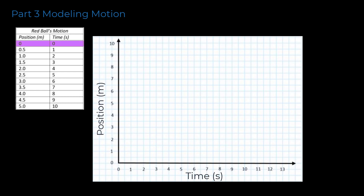The first dot is placed at a position of 0 meters at 0 seconds, indicating the starting position and time. At one second, the red ball moved to a position of 0.5 meters away from its starting position. We will place a dot at 0.5 meters on the y-axis above the one-second mark on the x-axis.